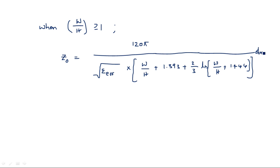All these are experimental values. We don't need to derive each one individually — just take the direct expressions. Whenever problems are asked on these, you can directly use these notations and substitute them. So these are the different parameters of the microstrip transmission lines. Thank you.